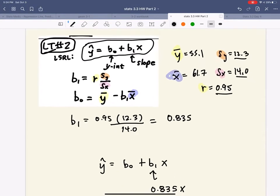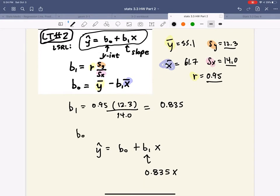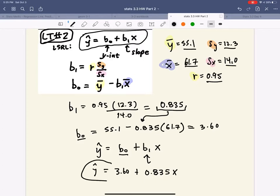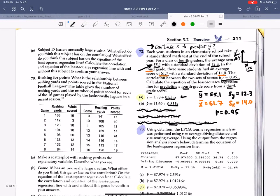I have b1. Now let's solve for b0. So that'd be y bar, 55.1 minus our value for b1 goes there. So we'll stick it there. And then our x bar. So I get 3.60. So 3.60 is b0. So I know what b0 is. I can substitute that in. And that is what my least squared regression line looks like. Now let's compare with our choices. There we go. It's pretty darn close. So I'm going to go with it. Answer.